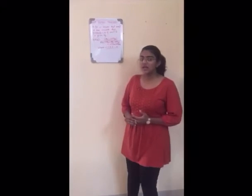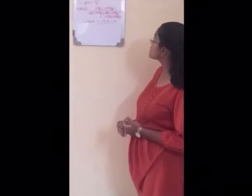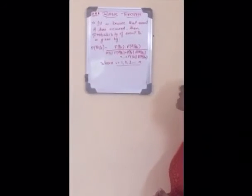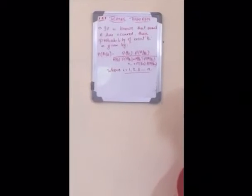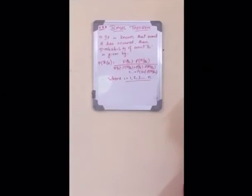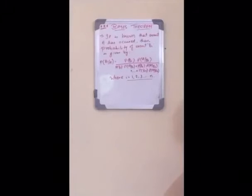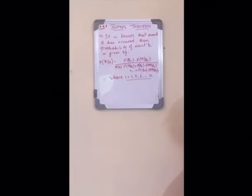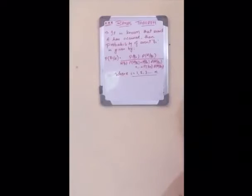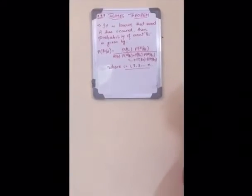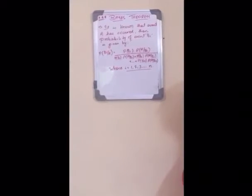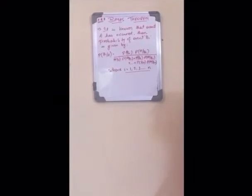Now let's understand Bayes' theorem. Bayes' theorem states that if it is known that event A has occurred, then the probability of event Bi is given by: P(Bi|A) = P(Bi)·P(A|Bi) / [P(B1)·P(A|B1) + P(B2)·P(A|B2) + ... + P(Bn)·P(A|Bn)], where i can be 1, 2, 3, up to N. Now let us solve an example based on Bayes' theorem.